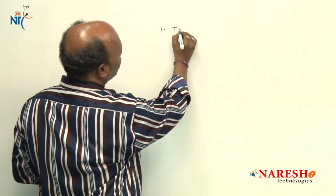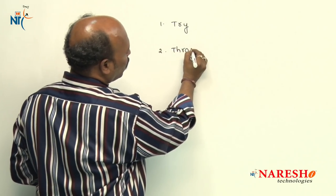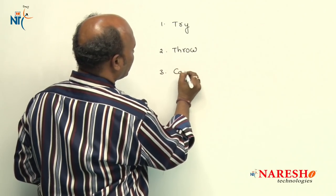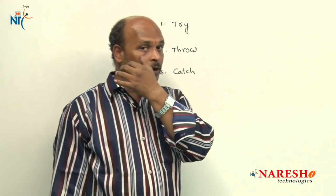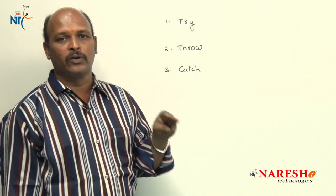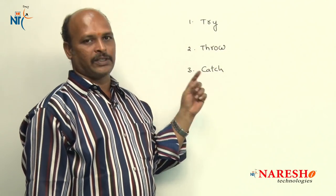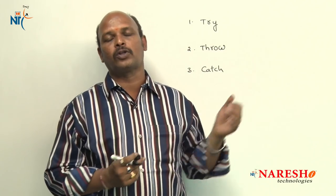In exception handling we have three types of keywords. One is try, another one is throw, and the third one is catch. In C++ we handle exceptions by using these three predefined keywords: try, throw, and catch.